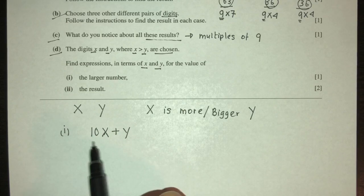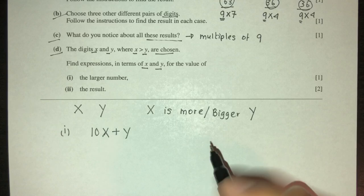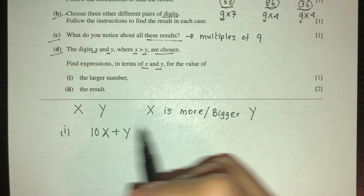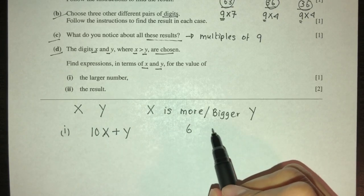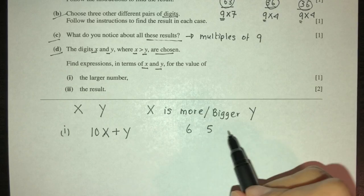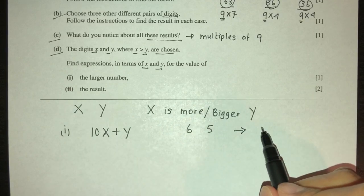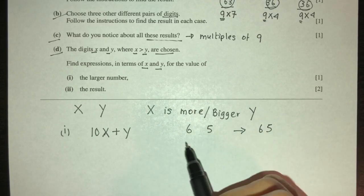Now the reason why we do 10x - for example, let's say we had two numbers. Let's say we had 6 and then we had 5. So you want to have 65. But now if you want to write 6 plus 5, that will give you 11, which is not what you want.